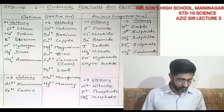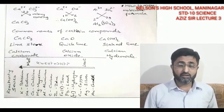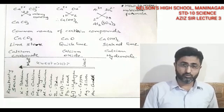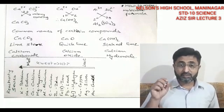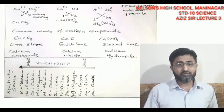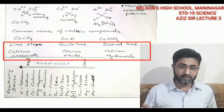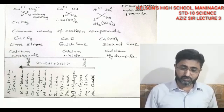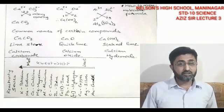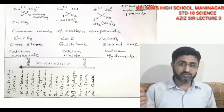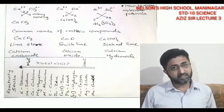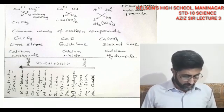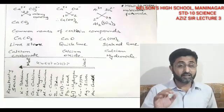Now I have written three calcium compounds on the screen as examples, because their common names are also very important for this chapter. Ca2+ with CO32− — both have valency two, so we cross and simplify to one-one — giving CaCO3, calcium carbonate. The common name for calcium carbonate is limestone.